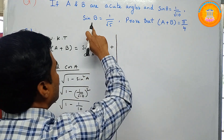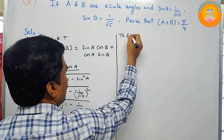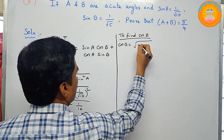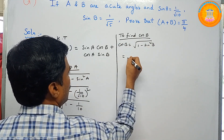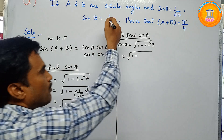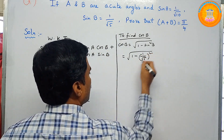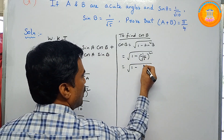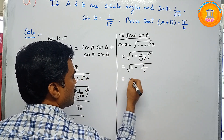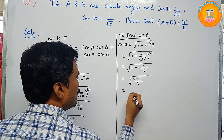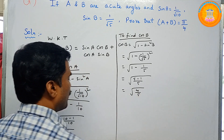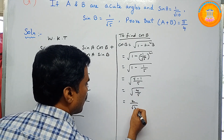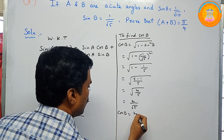Since sin B is given, we now find cos B. Similarly, cos B = √(1 − sin²B). Substituting sin B = 1/√5: cos B = √(1 − (1/√5)²) = √(1 − 1/5) = √(4/5). Applying the square root: √4 = 2, so cos B = 2/√5.